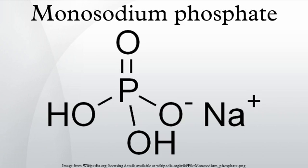Monosodium phosphate, also known as anhydrous monobaric sodium phosphate and sodium dihydrogen phosphate, is an inorganic compound of sodium with dihydrogen phosphate anion. One of many sodium phosphates, it is a common industrial chemical. It exists as an anhydrous salt, as well as mono and dihydrates.